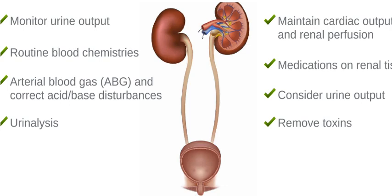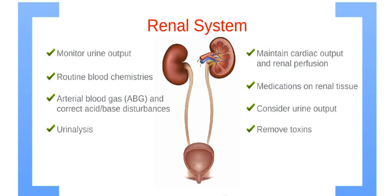Now let's discuss post-resuscitation care for the renal system. Monitor urine output. Low urine output could indicate pre-renal conditions, such as low intravascular volume caused by fluid shift. Exceedingly high urine output could indicate neurological or renal damage. Monitor routine blood chemistries, ABG and acid-base disturbances, and urinalysis. Maintain cardiac output to promote renal perfusion, and consider the effect of medications on renal tissue, the impact of fluid resuscitation, and the effects of toxins.